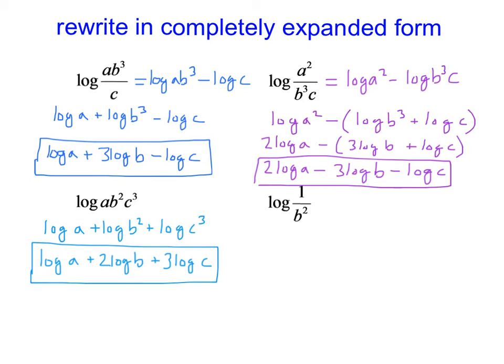So long version is we would view this as the logarithm of 1 minus the log of B squared. And the logarithm of 1, remember, is 0. That's going to be 0 minus 2 log of B. So that's just going to be negative 2 log of B.